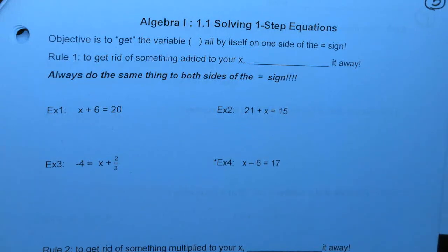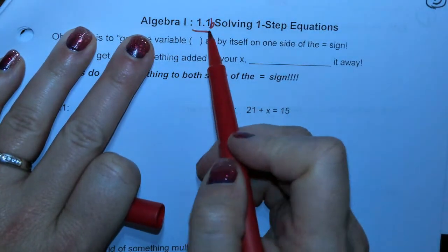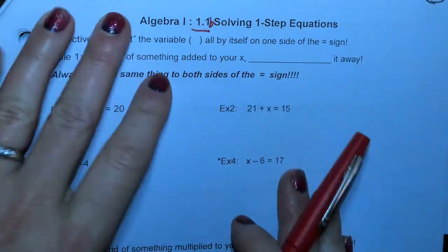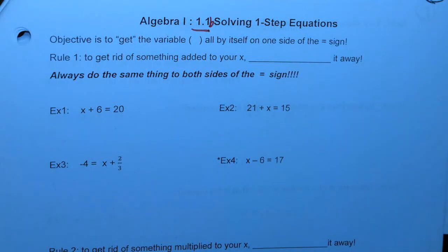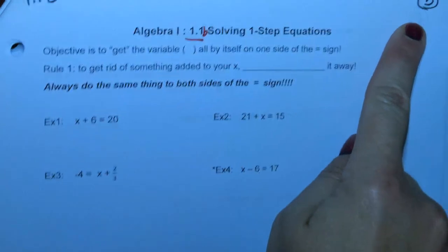Okay, so now we're on our second assignment, and it is going to be on 1.1 — we're calling this 1.1b. We're going to be solving one-step equations. You need to be on page 5 of your notes.